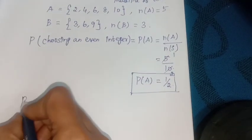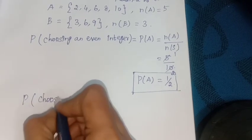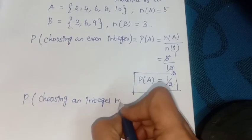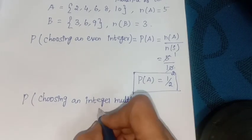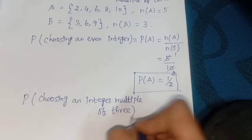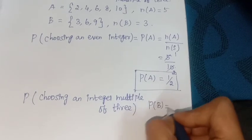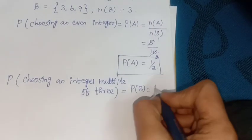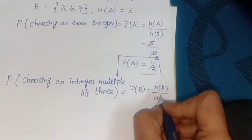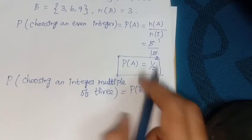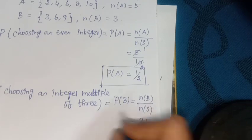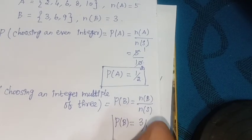Next, probability of choosing an integer multiple of 3: P(B) equals n(B) divided by n(S), equals 3 divided by 10. So P(B) equals 3/10.